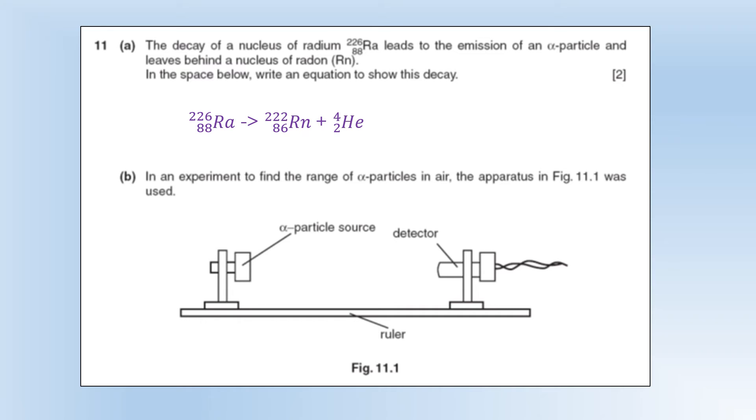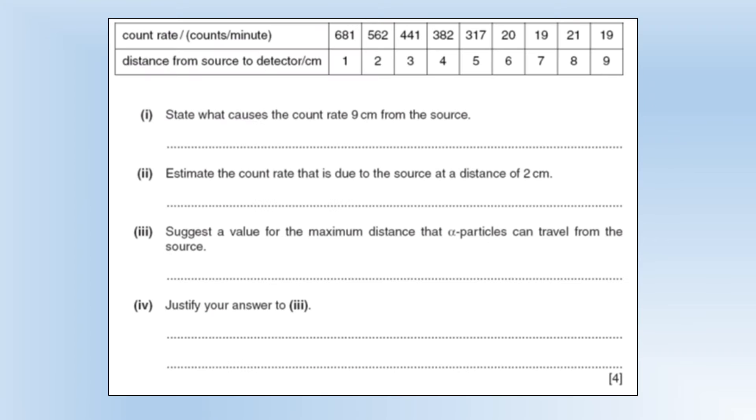Okay, so in an experiment to find the range of alpha particles, we've got this set of equipment. So basically we've got a source and a detector and a ruler to measure the distance between them. Okay, so state what causes the count rate,